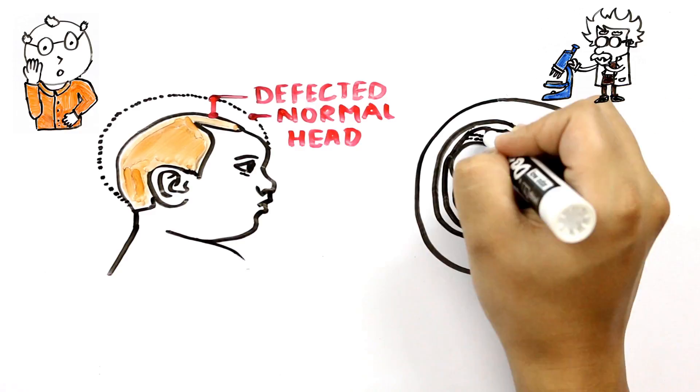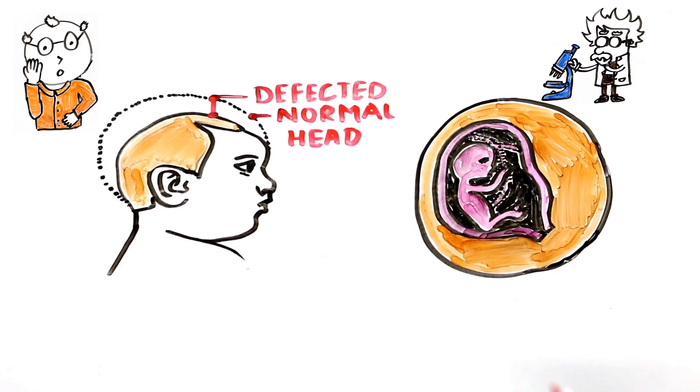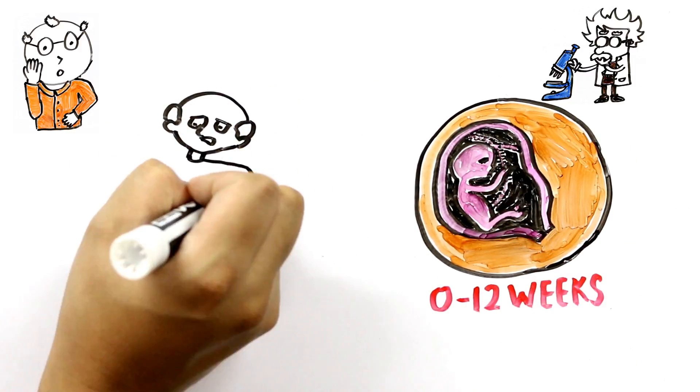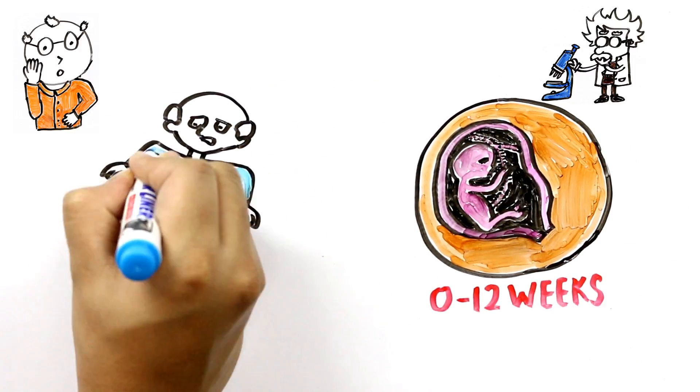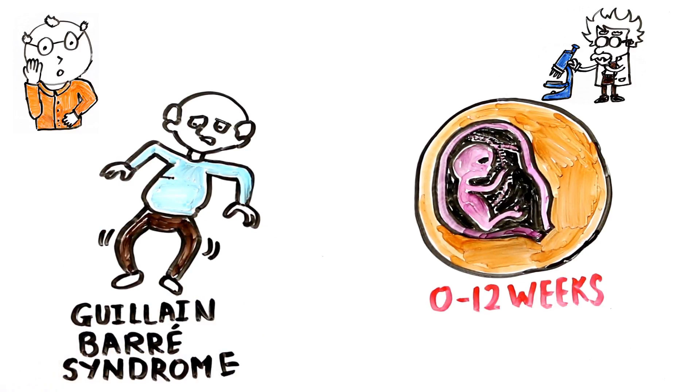Babies in the first trimester are particularly vulnerable to birth problems, though the risk can continue throughout the pregnancy. It's also suspected that Zika can cause Guillain-Barre syndrome, a very rare neurological condition that can cause paralysis. It's believed that Zika is linked to both these diseases, yet research is being carried out to confirm it clinically.